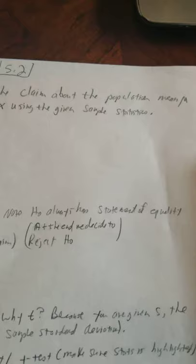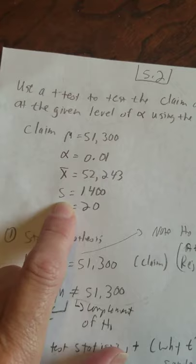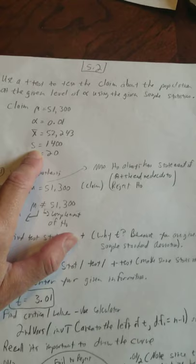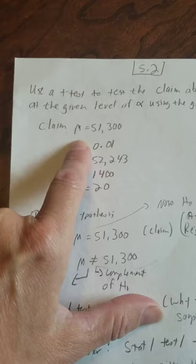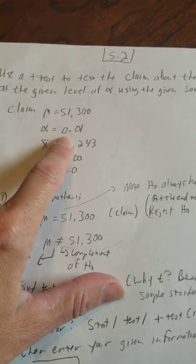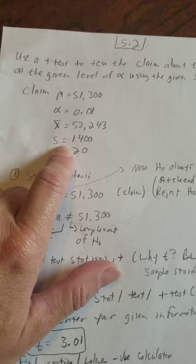Sigma is the population standard deviation. So if they use words, you're looking for population standard deviation or the symbol sigma. That signifies z-test. Most of the time in the real world, we do not have that information. So we have to use the sample standard deviation given in this problem. Okay, so in this problem, we're told to use the t-test to test the claim about a population with a mean of mu at the given level of alpha using sample statistics. So we're given all this information. We're told that the claim is mu equals 51,300. We're given alpha, 0.01. X bar is 52,243. S, the sample standard deviation is 1,400. And N equals 20.